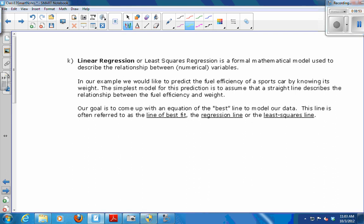So once you know the two variables are correlated, they have some kind of almost linear relationship, we want to get a line, the line of best fit. We call that the linear regression or the least squares regression. It's the equation of the line of best fit. So I want to be able to predict the fuel efficiency of a sports car by knowing its weight. The simplest model is to assume a straight line describes the relationship. And I want to come up with the best line to model the data.